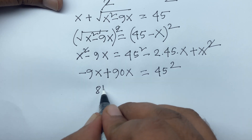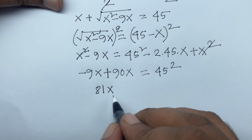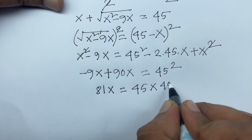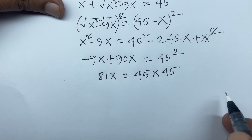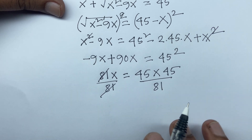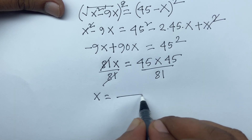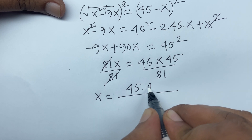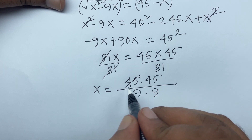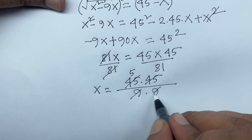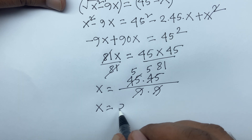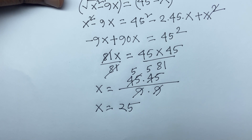So 81x equals 45 times 45. Dividing both sides by 81, x equals 45 times 45 over 81, which is 9 times 9 equals 81 in the denominator. Simplifying: 45 divided by 9 is 5, so x equals 5 times 5, which equals 25. This is our final answer.